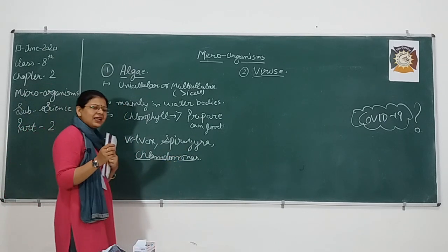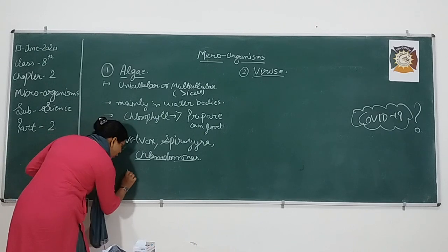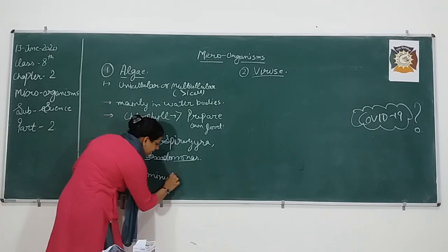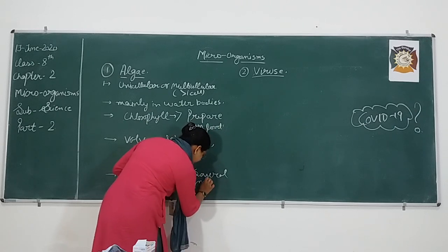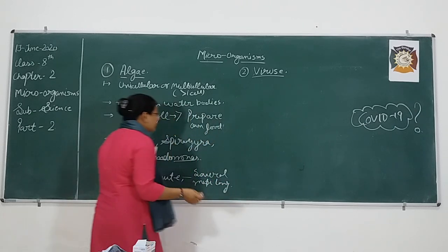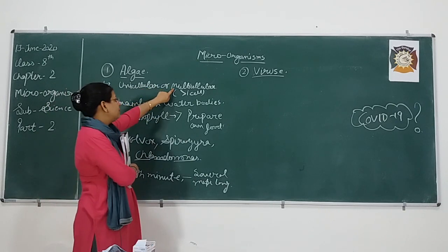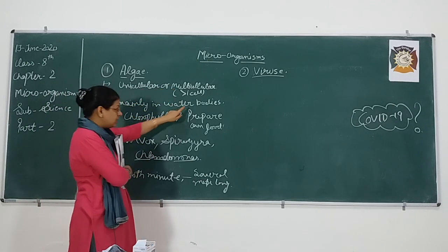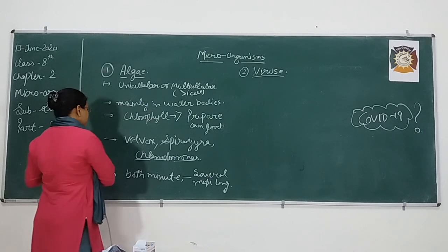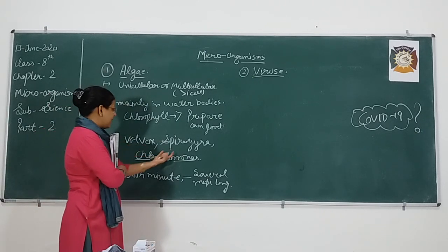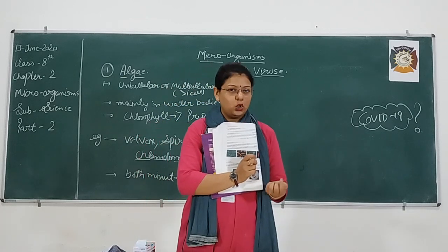About their size — are these algae very minute or are they several meters long? They are both: from very very small to several meters long. So to recap: algae are both unicellular and multicellular, they exist mainly in water bodies, they contain chlorophyll so are able to prepare their own food, examples are Volvox, Spirogyra, and Chlamydomonas, and their size ranges from minute to several meters long.